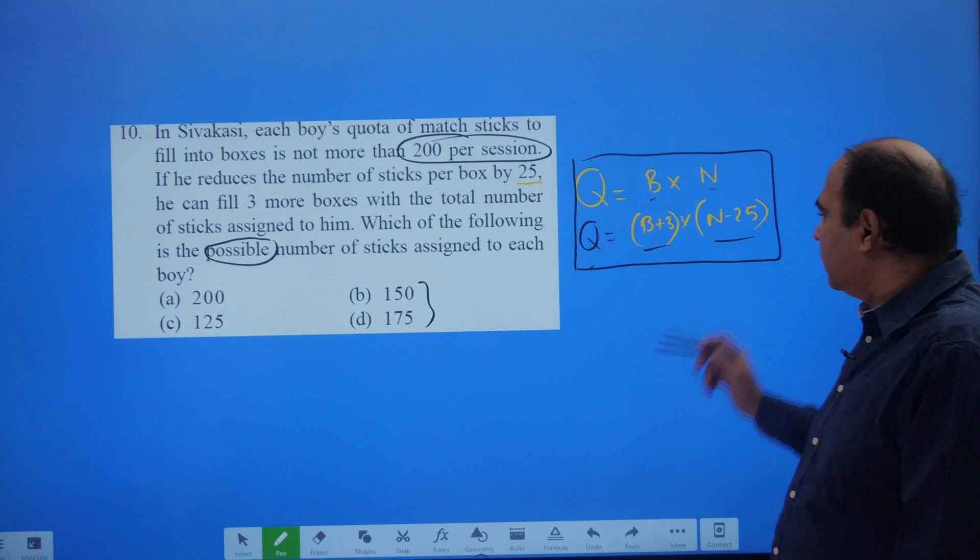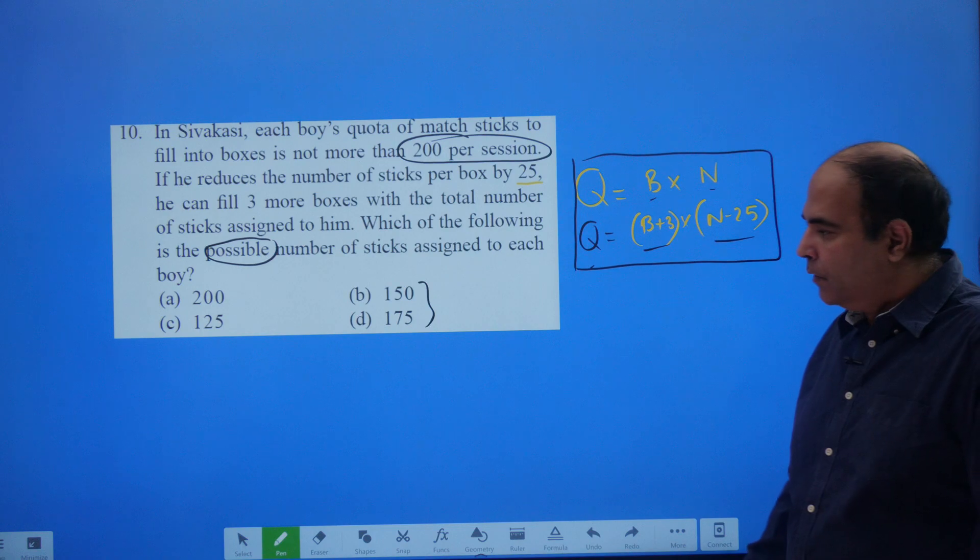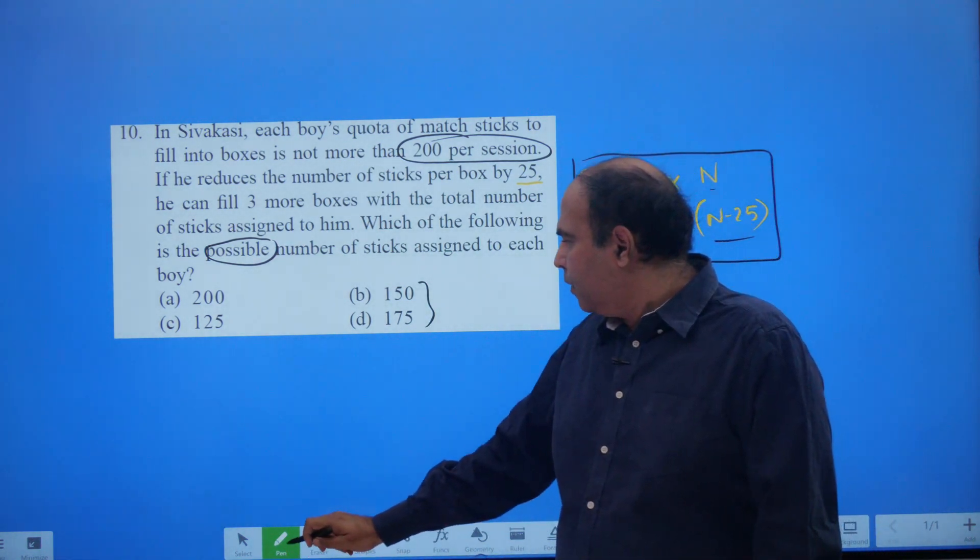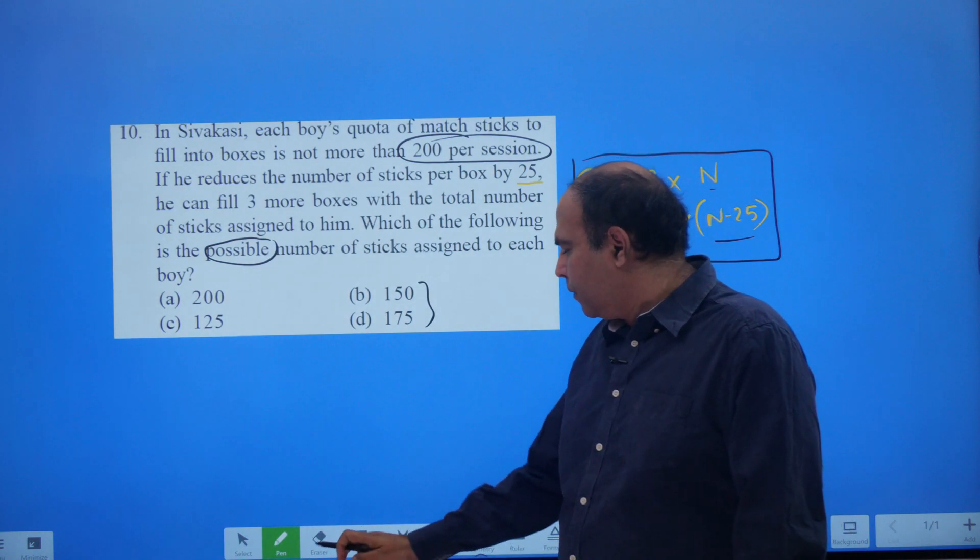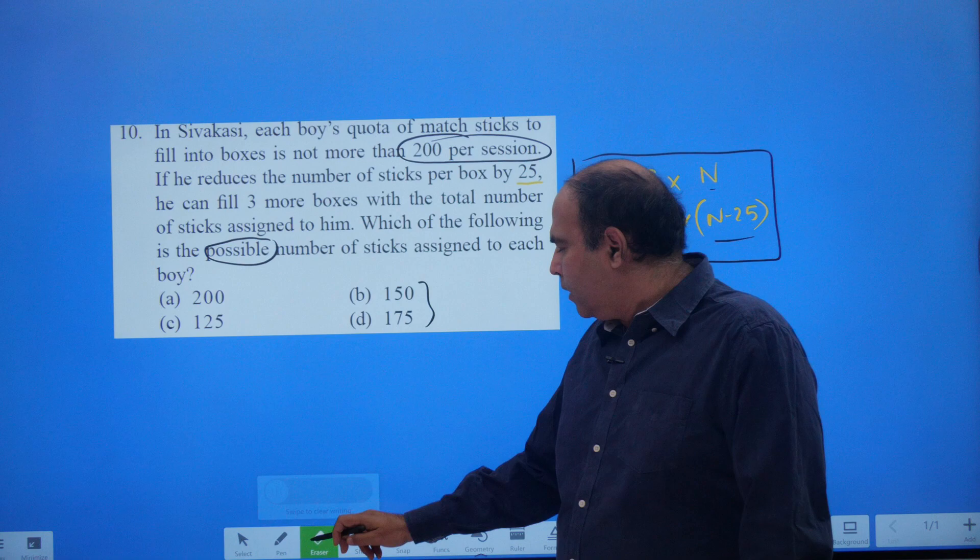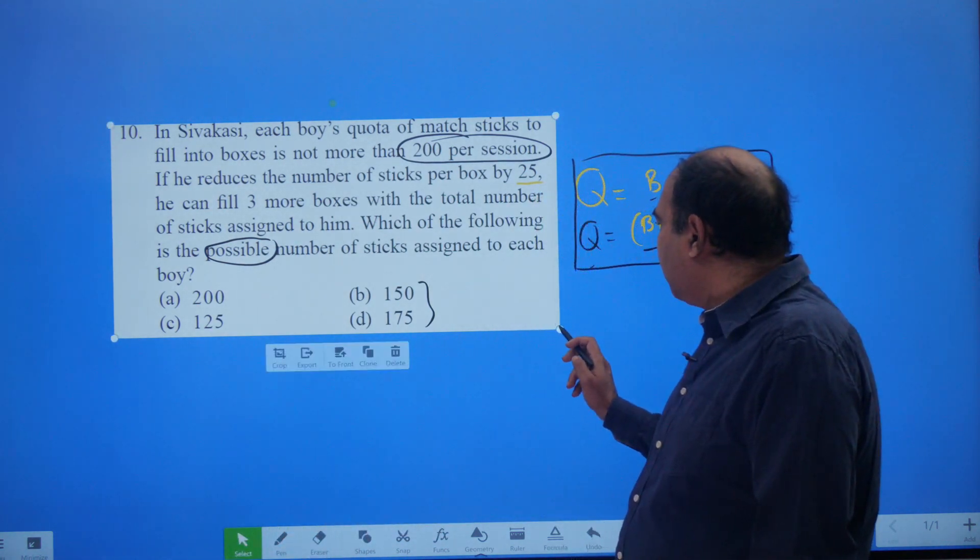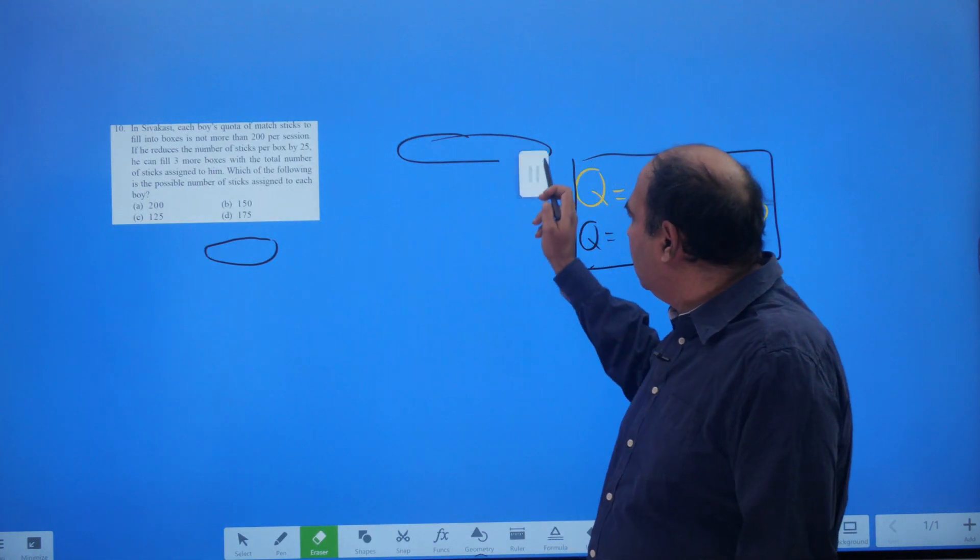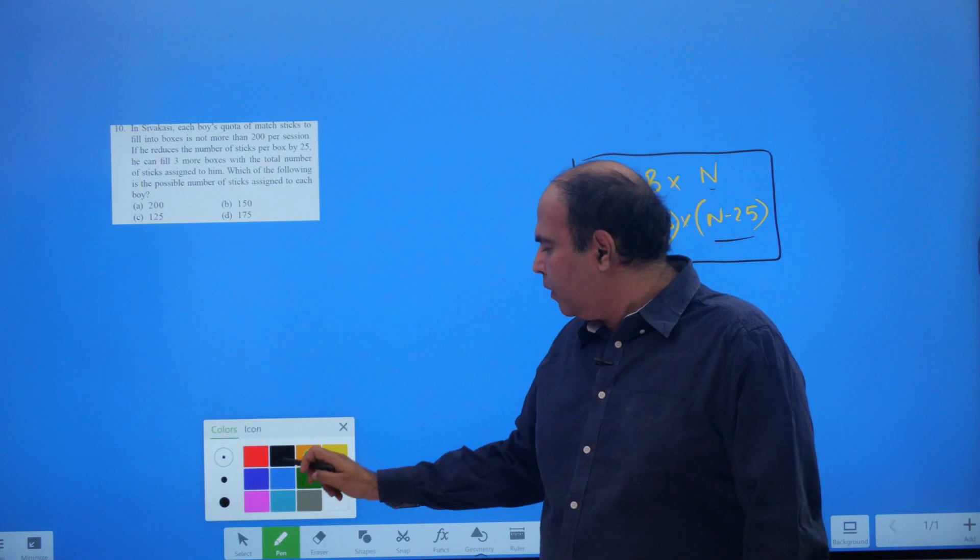And another pair of factors where there's an increase of 3 and a decrease of 25. So if I suppose I try to go with an option like 200, let's say I go with an option of 200. If I look at my factor pairs of 200, what happens is that the factor pairs of 200 are 200 into 1, 2 into 100, 3 does not divide it, 4 into 50, 5 into 40.